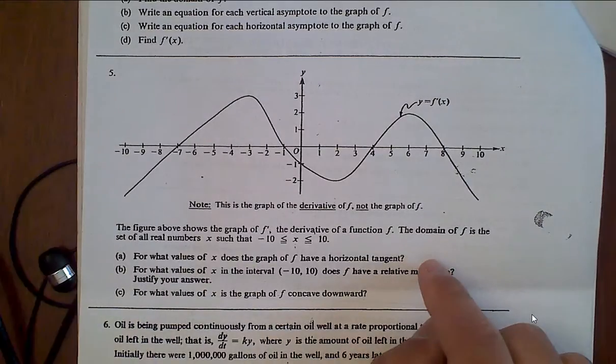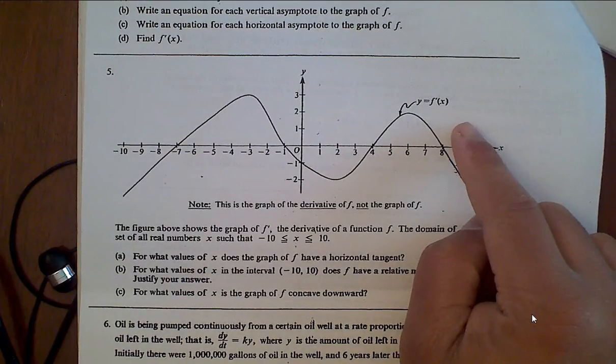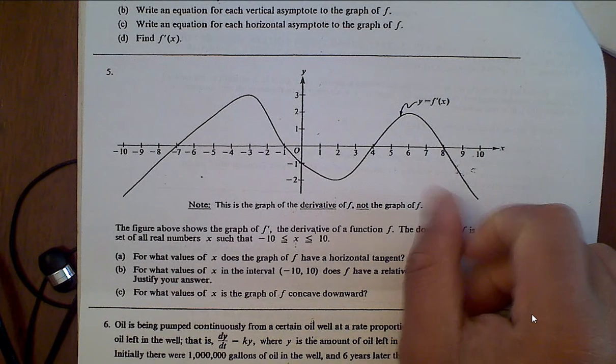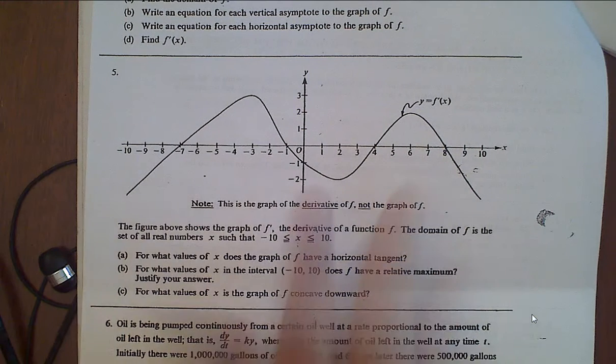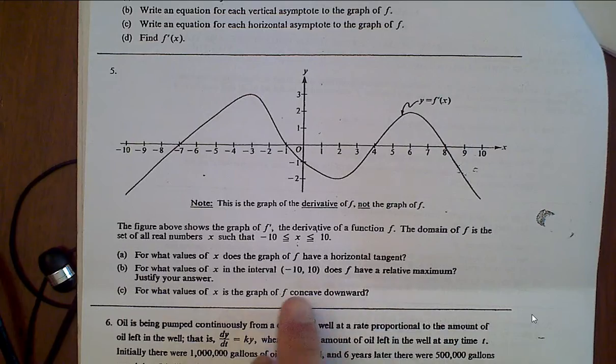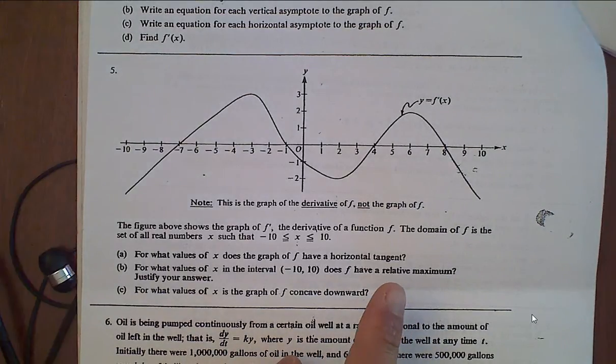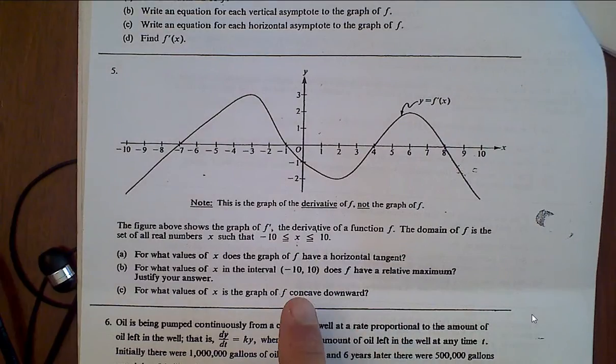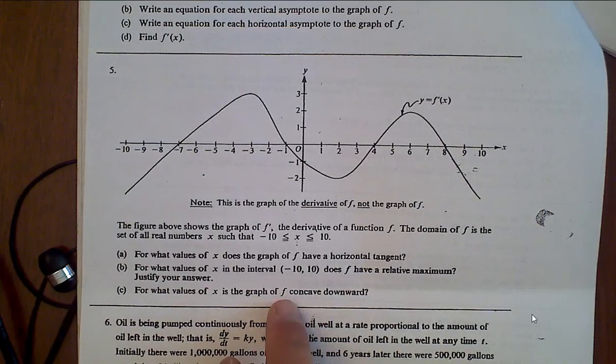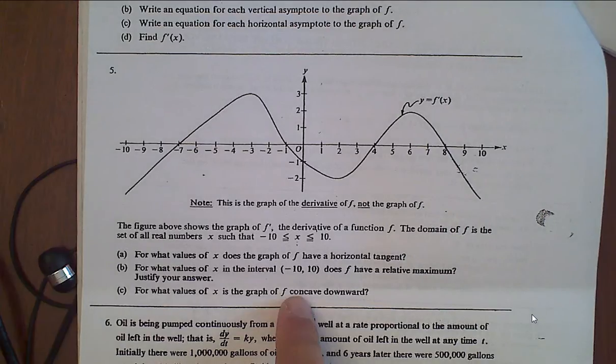For what values of x does a graph have a horizontal tangent? This is the derivative, yeah? So we have a saying, right, the derivative is always the slope. So just some things you have to put together graphically, alright? What values on the interval does f have a relative maximum? Justify your answer. Now this is a relative maximum, so we don't have to make a global argument, okay? For what values of x does a graph concave downward? This is a tricky one, because we talk about concavity in terms of the original function, but you have to use your noggin. Alright?